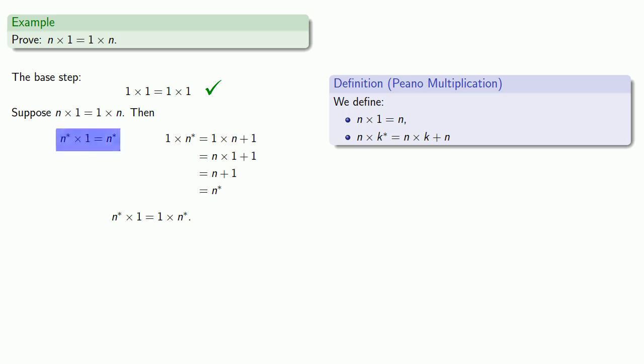And so n star times 1 is n star, and 1 times n star is n star. And so if n times 1 is 1 times n, then the same thing is true for the successor.